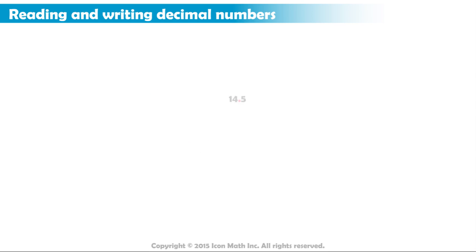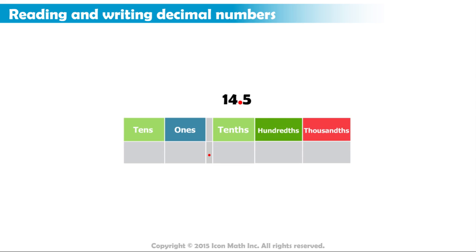Let us take the first number and write it inside a place value chart. The tens place contains the digit 1. The ones place contains the digit 4. And the decimal point comes immediately to the right of the ones place. Then comes the first decimal place, which is the tenths place. In this place, we have the digit 5.